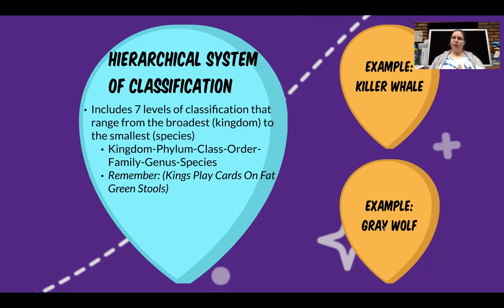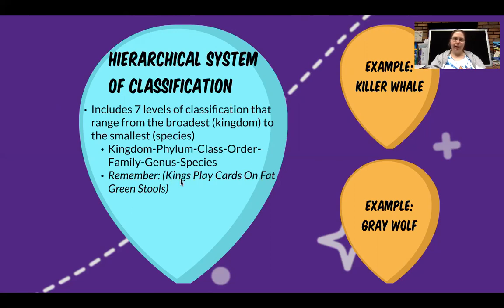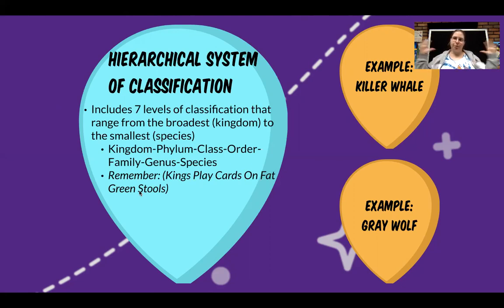I was taught a mnemonic device: Kings play cards on fat green stools — K, P, C, O, F, G, S — kingdom, phylum, class, order, family, genus, species. It helped me out, and it might help you out. You might come up with your own, as long as it helps you remember it. We start with the broadest and bring it all the way down to the smallest, and I'll show you some examples.